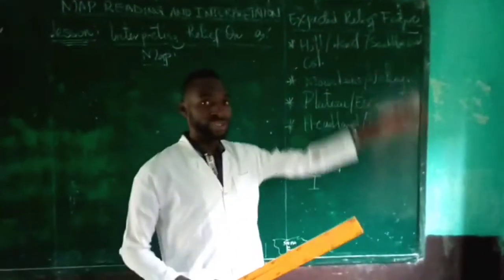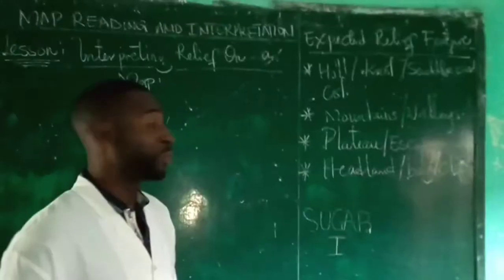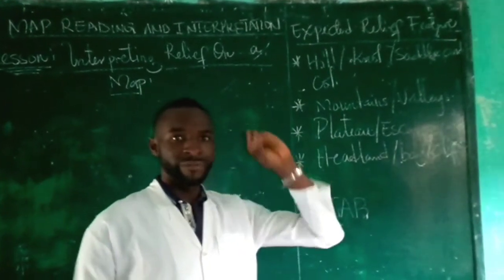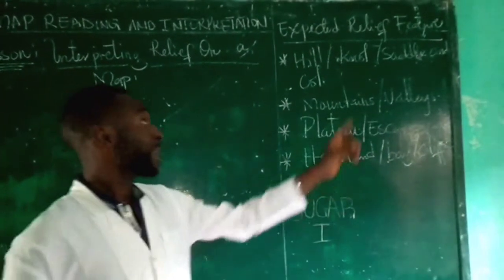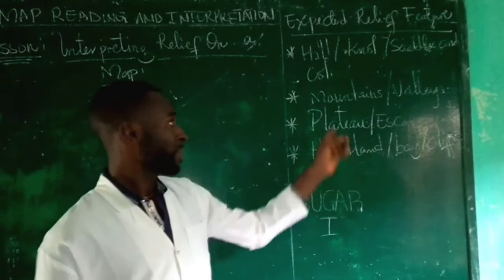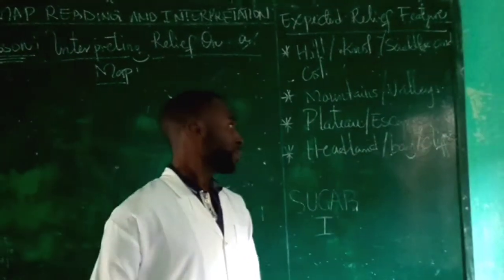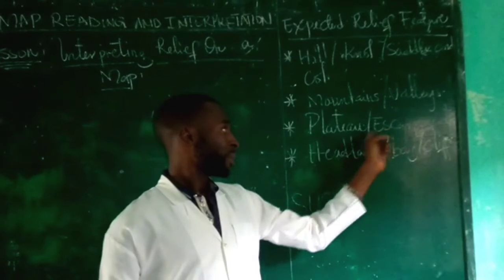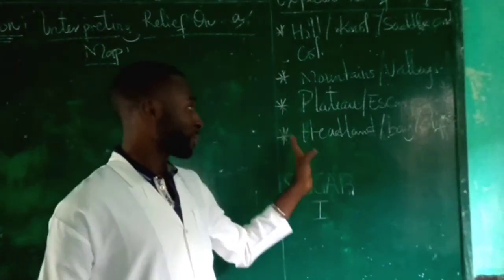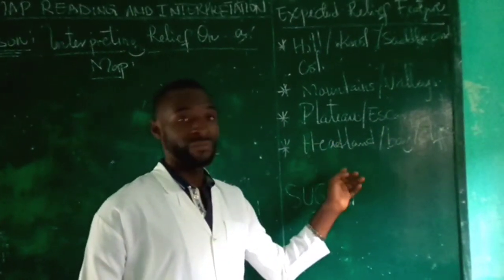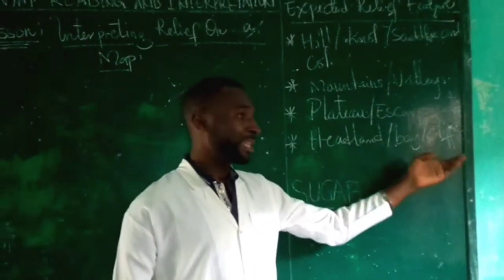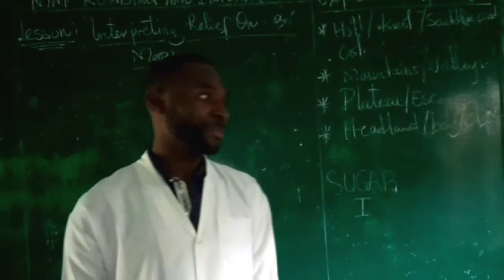We are going to look at the expected relief features one should find on a topographic map. Among them we have features such as the hill, and we will talk about the various types of hills. We will look at the knoll, the saddle, and col — these features are mostly found around the hill. We are going to talk about mountains, valleys, plateaus, and where there is a plateau there is always an escarpment. On the coastal areas we expect to find headlands, bays, inlets, lagoons, and cliffs.